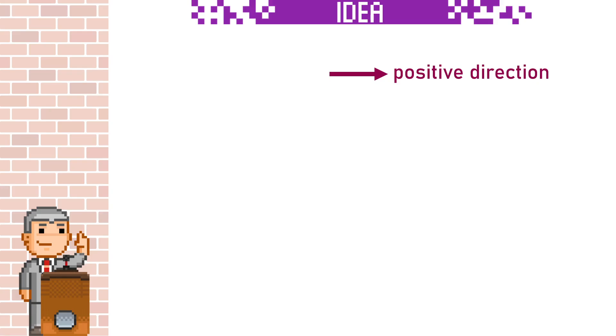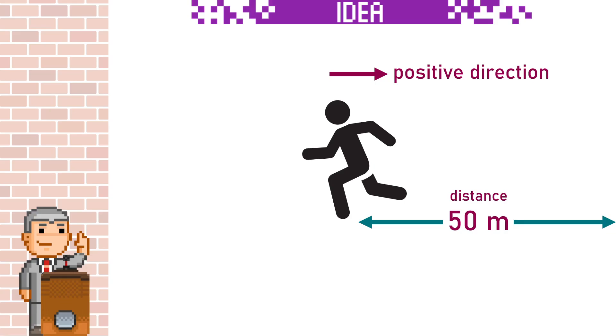For vectors we must always define the positive direction. If a man is running to the left and the positive direction is to the right, we can say he travelled a distance of 50 metres, but his displacement will be minus 50 metres because it was in the negative direction.